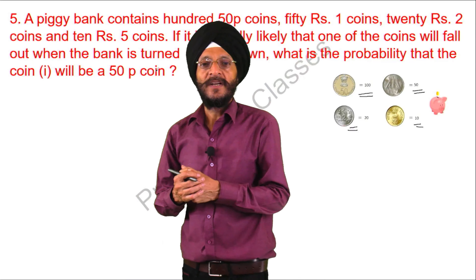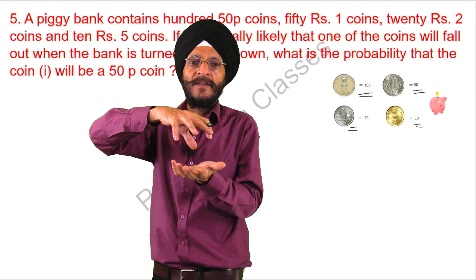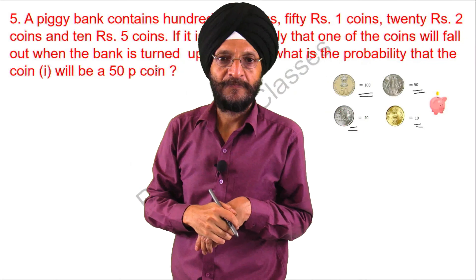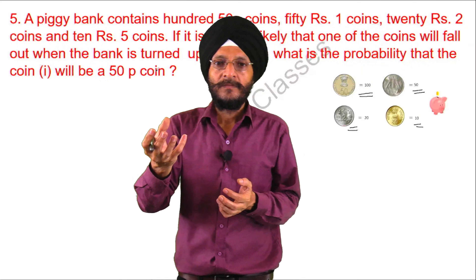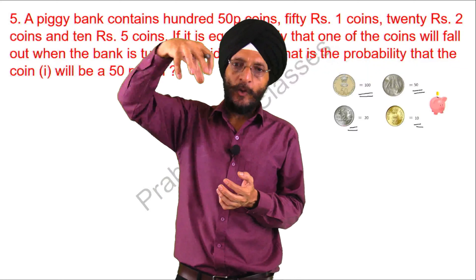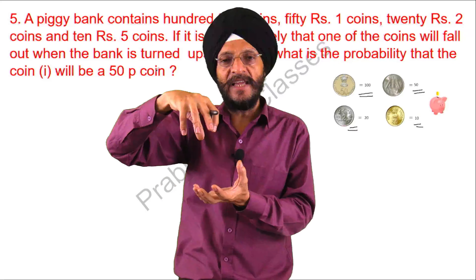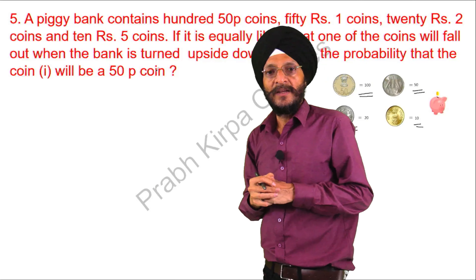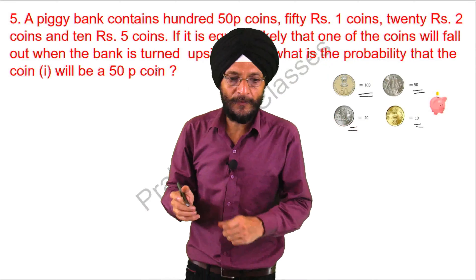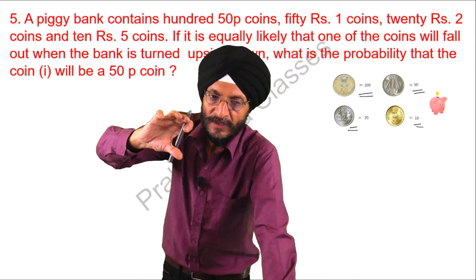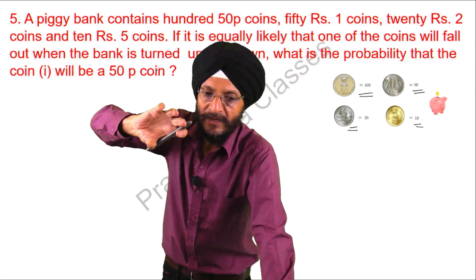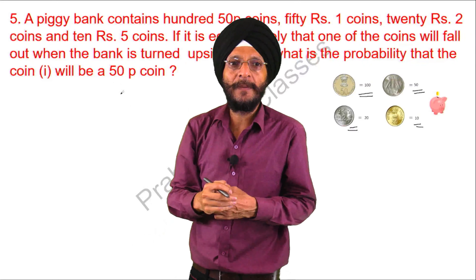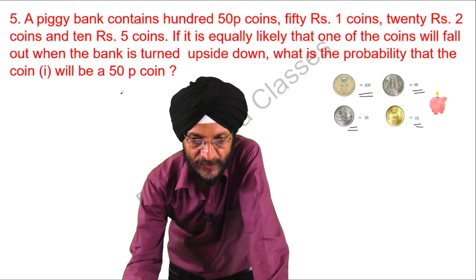What is given in this question? There is a piggy bank with coins of different denominations placed in it. If we place it downward, there is a likely chance that one of the coins will come out. We need to calculate the probability that when we turn the piggy bank downward, the coin that comes out will be a 50 Paisa coin.